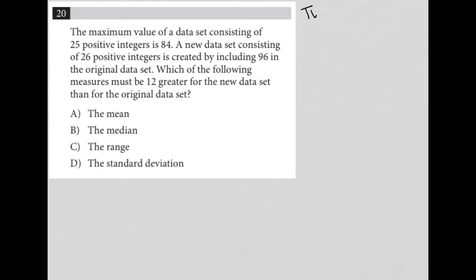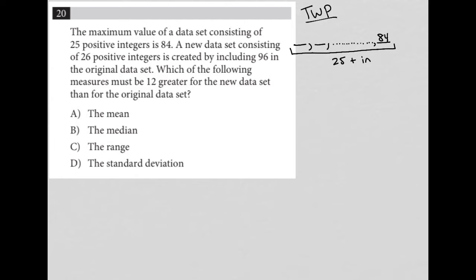This question is a translate word problem. We want to read it one sentence at a time and make sure we are writing down any quantitative information. The first sentence says the maximum value of a data set consisting of 25 positive integers is 84. I'm going to write that down in a visual way — I have this data set, some dots, and at the end of that data set is the number 84. Altogether, this is 25 positive integers.